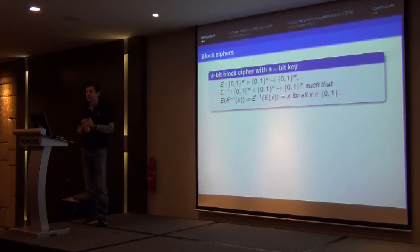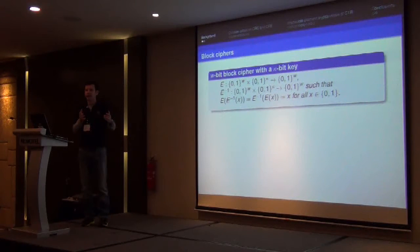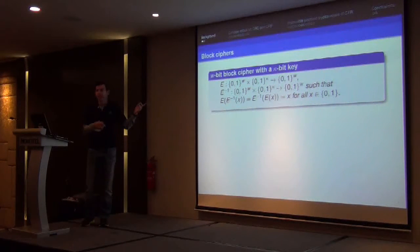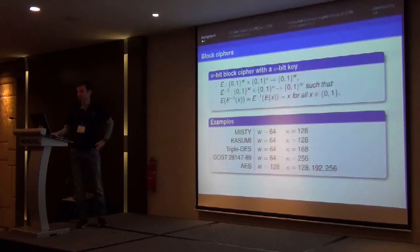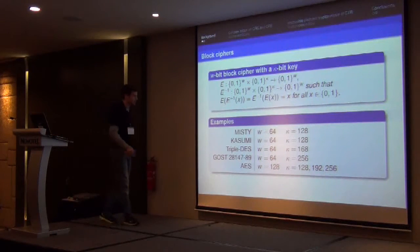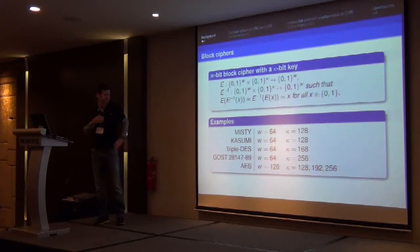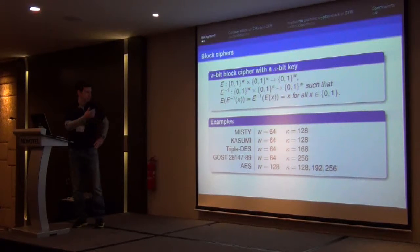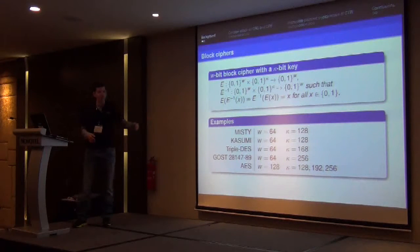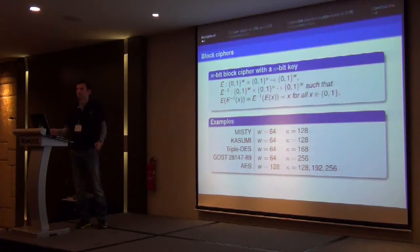I'm talking about block ciphers today. The block cipher will have two inputs: a key and a plaintext, or the ciphertext if you're doing decryption. I'm going to be focusing on the number of bits in the plaintext, which I'm denoting as W. Some good examples include 64-bit block ciphers like Triple DES, which are still in fairly widespread use. Since 2000, AES and other block ciphers use 128 bits instead of 64.